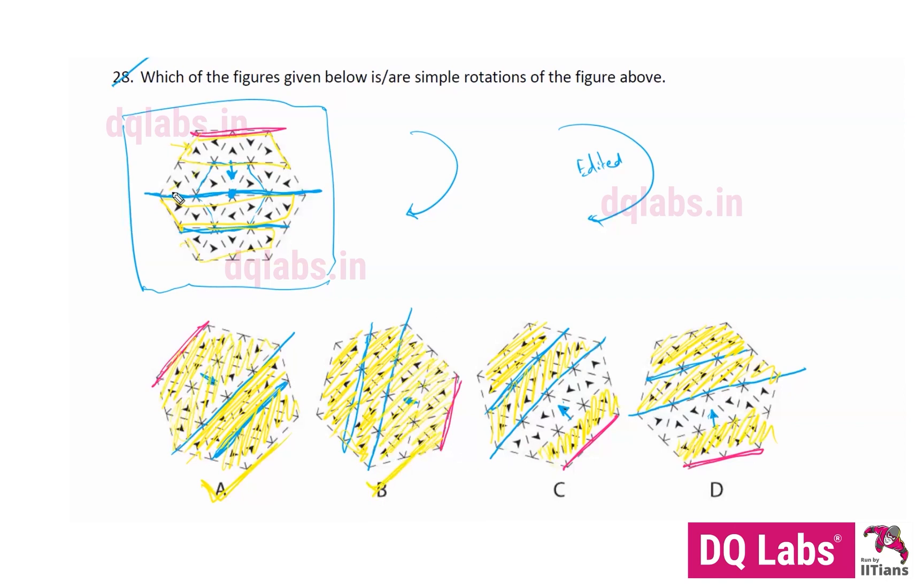Now C. Now C is incorrect. If we take a look at this one, see, this is pointed towards this reference line, but for this one this is pointed away from the reference line. So this is one edit from C. C is incorrect.